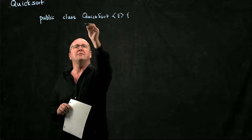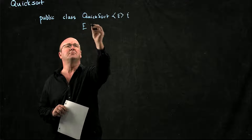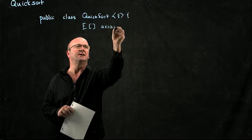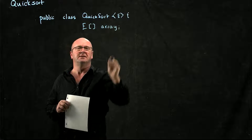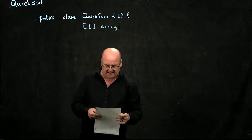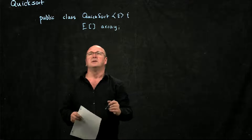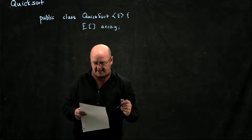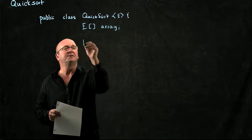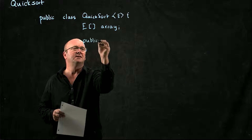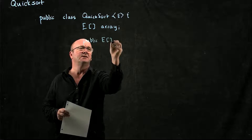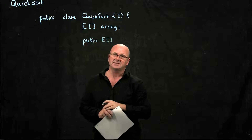We're going to have a globally scoped array, which I call `array`, so I remember what it is. And we're going to have a method that is going to accept an array of E's.